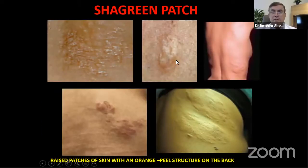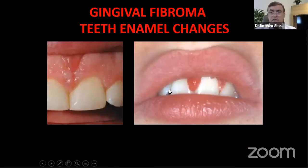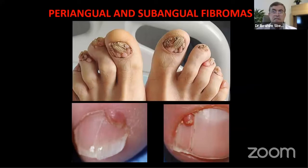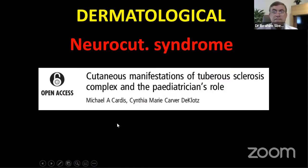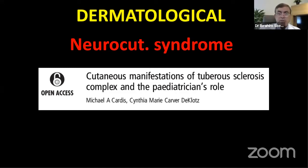The shagreen patch is important and is usually mistaken for psoriasis. Intraoral examination reveals enamel changes and gingival fibroma, which is very characteristic and one of the main features of this disease. Periungual and subungual fibromas appear at the nails and feet. There is a very important role for the pediatrician in recognizing these cutaneous manifestations of tuberous sclerosis complex.